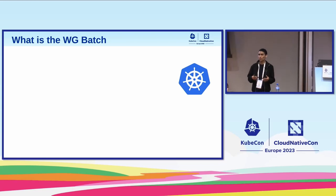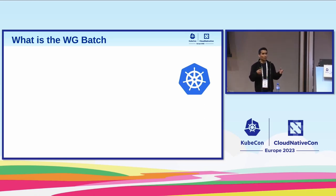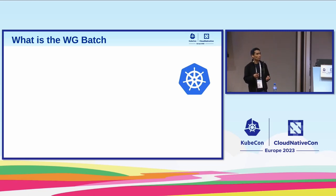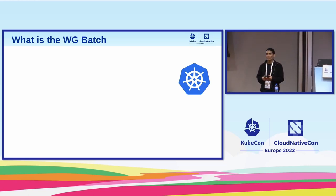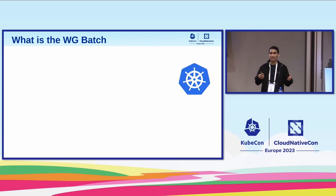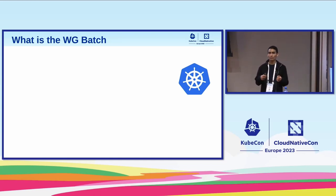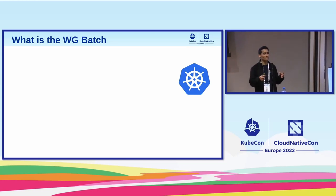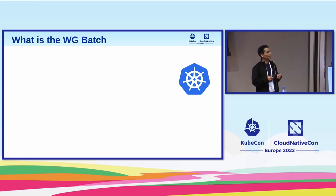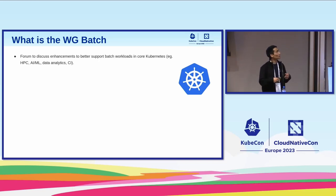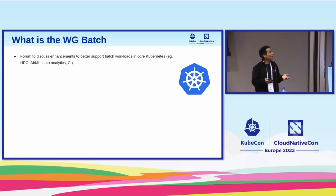First of all, I want to explain what a working group is within Kubernetes for those who might not be familiar. SIGs are special interest groups within Kubernetes, each with responsibility to maintain a set of components. A working group is different in that it doesn't own any components and has a temporary nature — we get together to solve a specific problem, then decide to dissolve or evolve into a SIG. I'm here to talk about Working Group Batch, which is a forum to discuss enhancements to better support batch workloads.